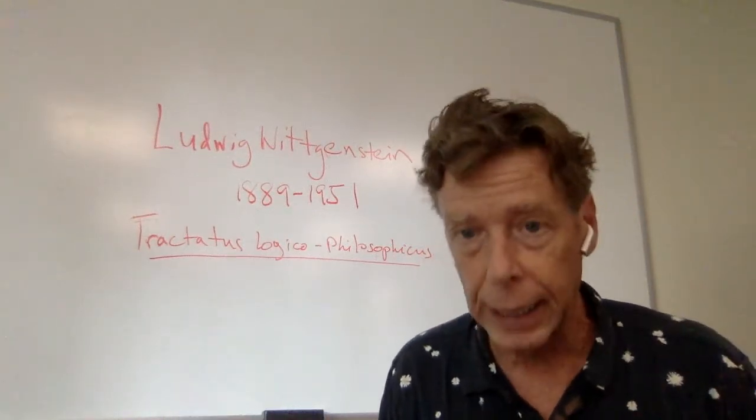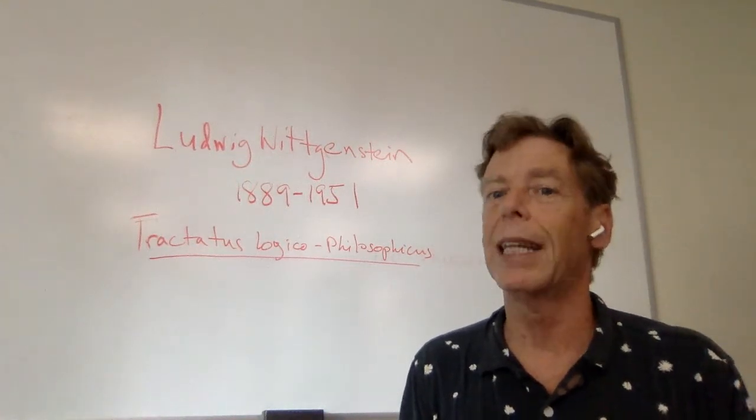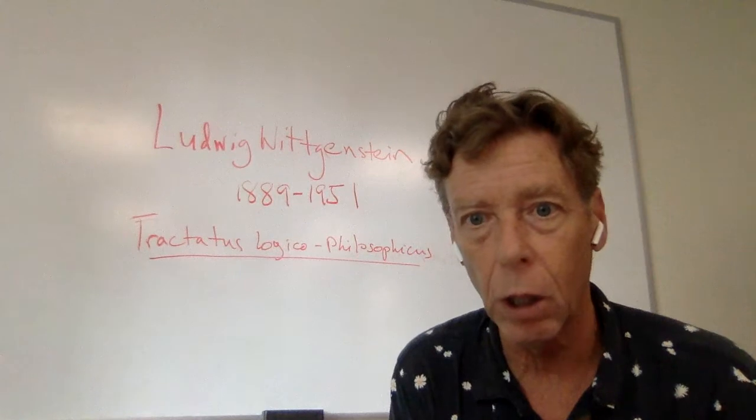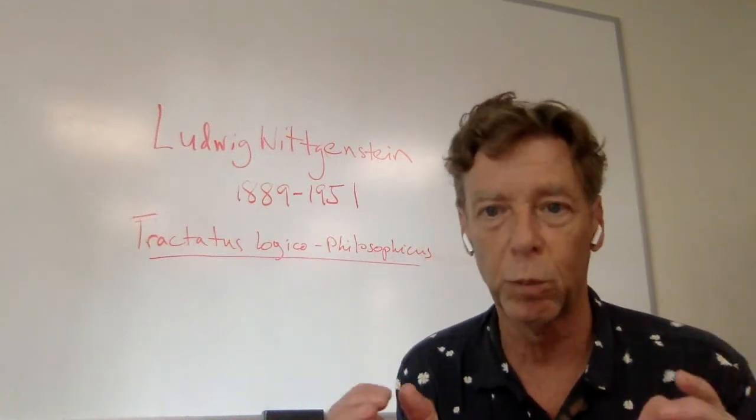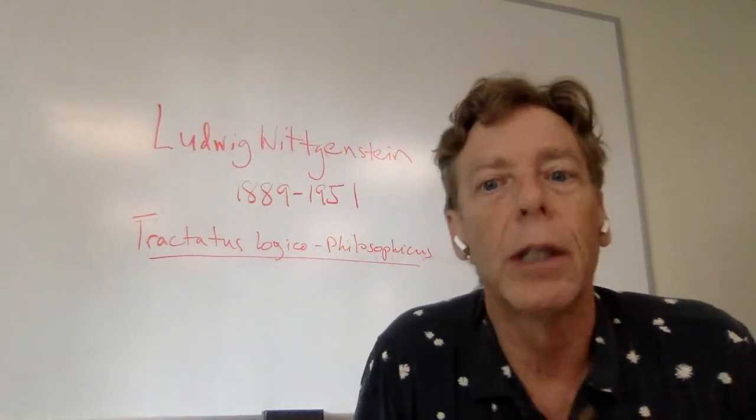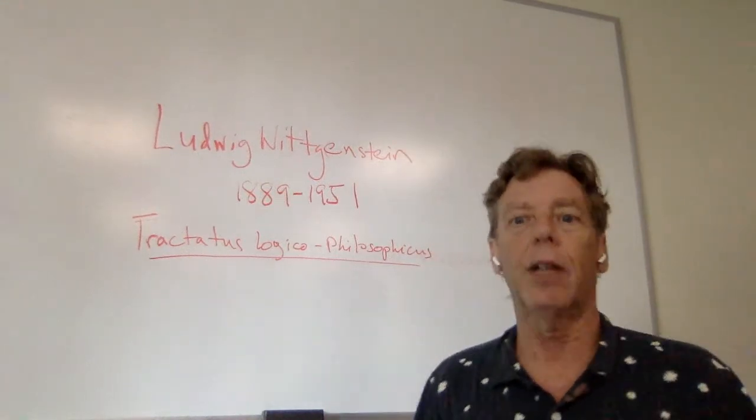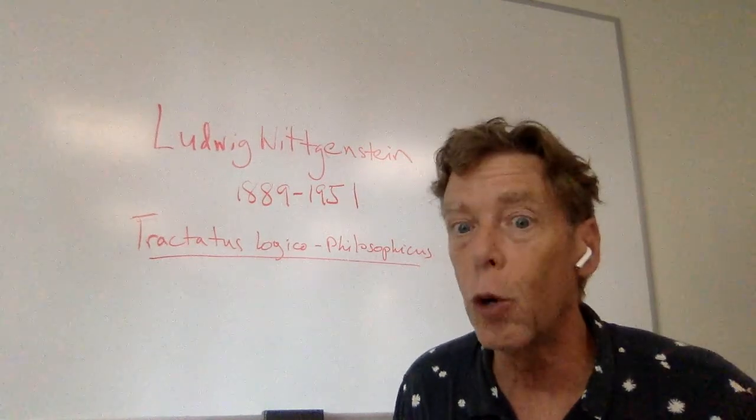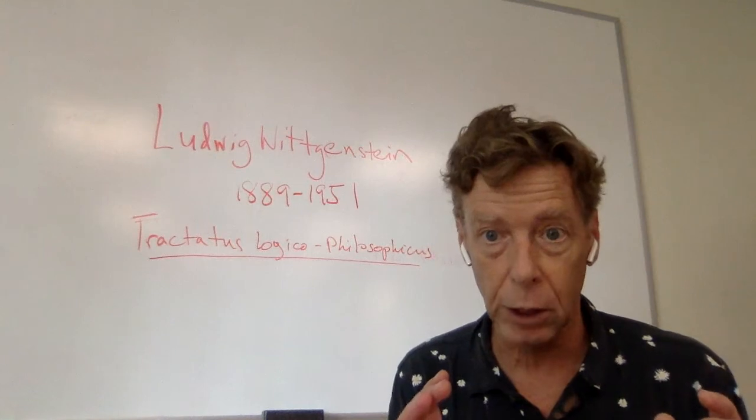Now the chairs in space are the fact, the situation, what is the case? And the proposition is that this chair is to the left of that chair. Wittgenstein says that this proposition represents that state of affairs in virtue of being a picture of it. The proposition is a picture. A proposition is a picture of a fact, or at least an atomic proposition, a basic proposition. The minimal size proposition is a picture of a basic fact.